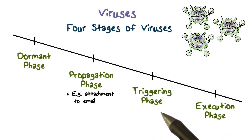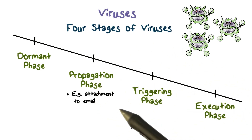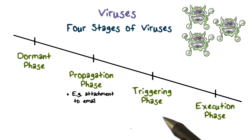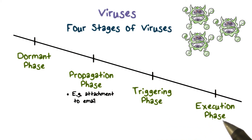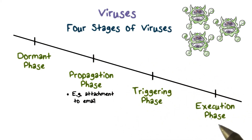And that's how it can be propagated, triggered, and executed — and again propagated, triggered, and executed. This cycle repeats, and that is how a virus spreads.